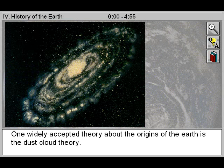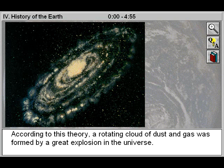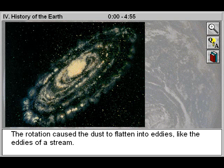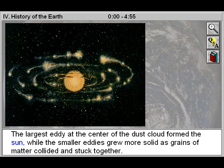One widely accepted theory about the origins of the Earth is the dust cloud theory. According to this theory, a rotating cloud of dust and gas was formed by a great explosion in the universe. The rotation caused the dust to flatten into eddies, like the eddies of a stream. The largest eddy at the center of the dust cloud formed the sun, while the smaller eddies grew more solid as grains of matter collided and stuck together.